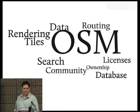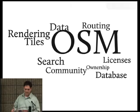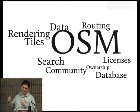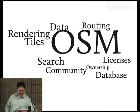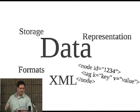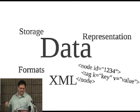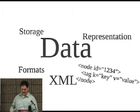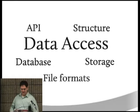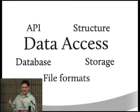When we think about OSM, there's lots of components, right? There's our data, there's our rendering, there's our tiles, there's our search, there's our licenses, our community, all that stuff. But I think mostly about the data — the data storage, the representation, our data formats, our XML, our data access, which includes our API, how we internally structure our data for export, our database, our file formats, and our storage.